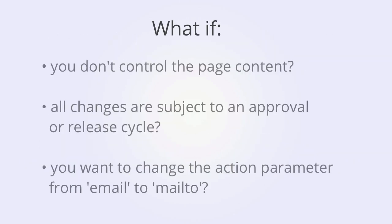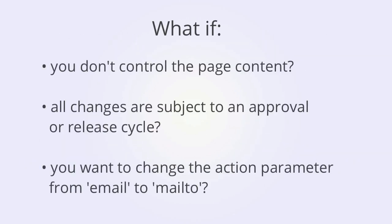What if you don't directly control changes to page content? What if every change that you want to make is subject to an approval or release cycle that could take weeks or even months? And what if, at some point, you want to change the action parameter of the event from 'email' to 'mail to,' and you have to go through the same hassle again? This is where Google Tag Manager comes in.